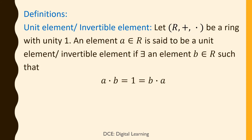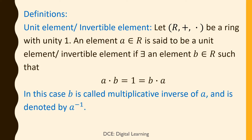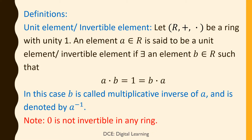Some definitions. Unit element or invertible element: Let R (plus, dot) be a ring with unity. An element a belonging to R is said to be a unit element or invertible element if there exists an element b belonging to R such that a·b = 1 = b·a. In this case, b is called the multiplicative inverse of a and is denoted by a⁻¹. Note that 0 is not invertible in any ring.